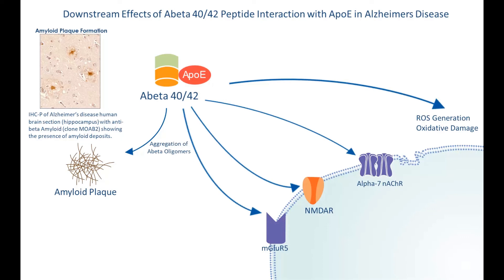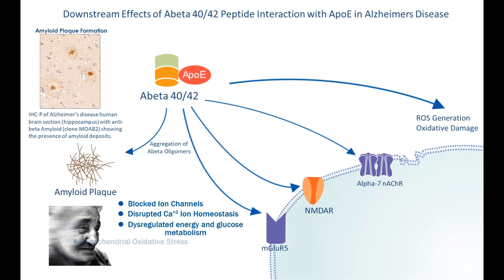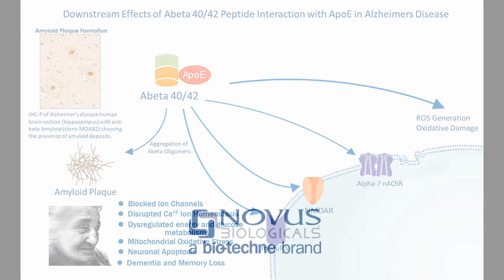All of this results in blocked ion channels, disrupted calcium ion homeostasis, dysregulated energy glucose metabolism, mitochondrial oxidative stress, and neuronal apoptosis, which ultimately results in dementia or memory loss.